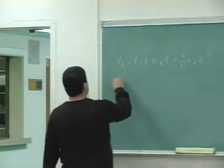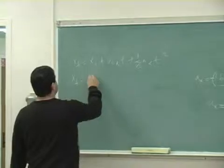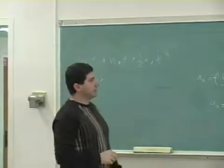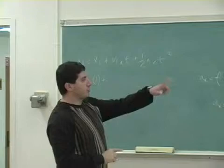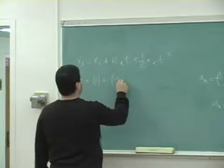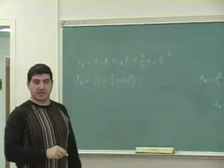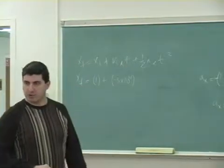So x final is going to be x initial, which is one meter. v initial x is going to be negative 3 times 10 to the fourth. The time is 2 milliseconds, which is 2 times 10 to the minus 3.